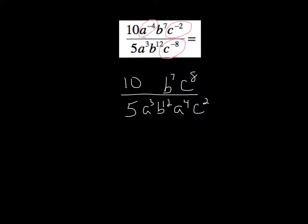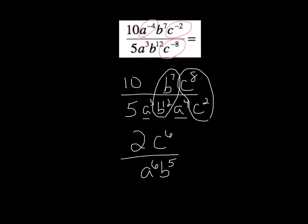Now, I'm going to use my standard division protocol here. Ten divided by five is two. I have a to the third and a to the fourth on bottom, so that's an a to the sixth on bottom. I have a b to the seventh divided by b to the twelfth. That's a b to the negative fifth, so I'm going to move that right to the bottom as a b to the fifth. And then finally, c to the eighth divided by c squared, eight minus two, leaves me a c to the sixth, and being a positive exponent, that will land on top. And I've fully simplified this complex expression.